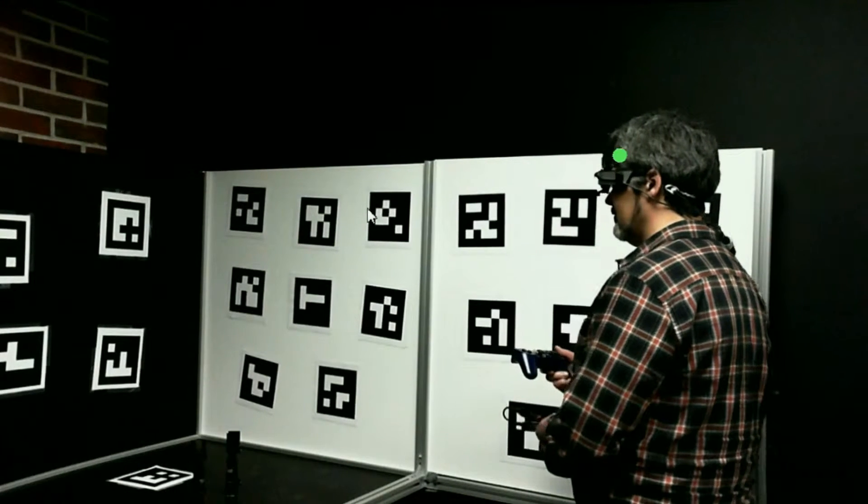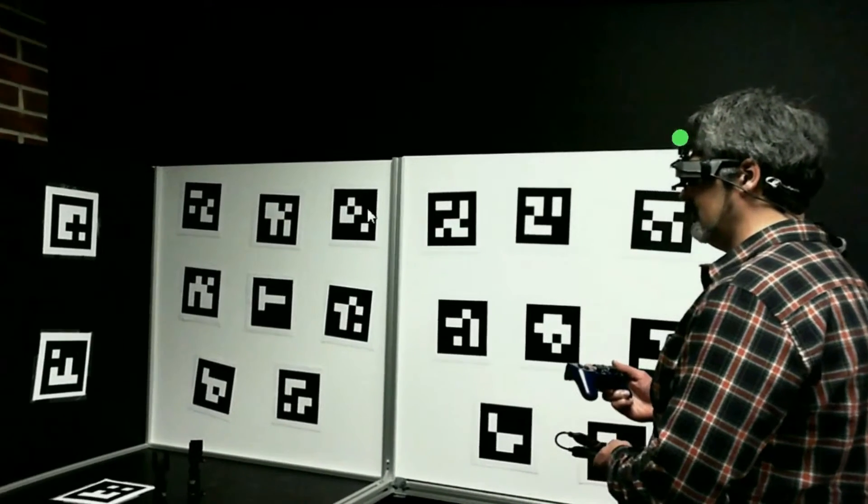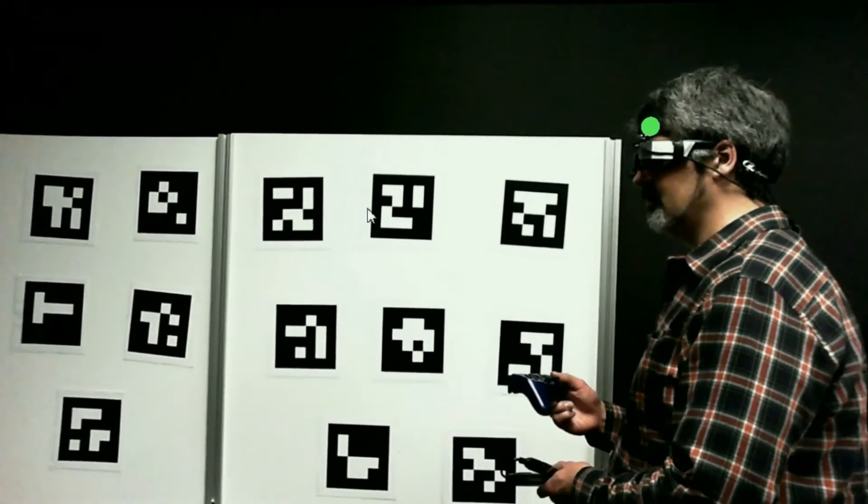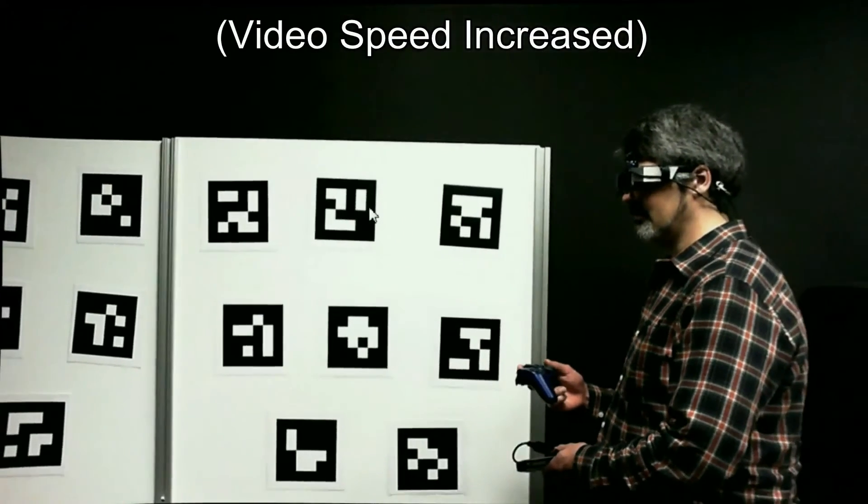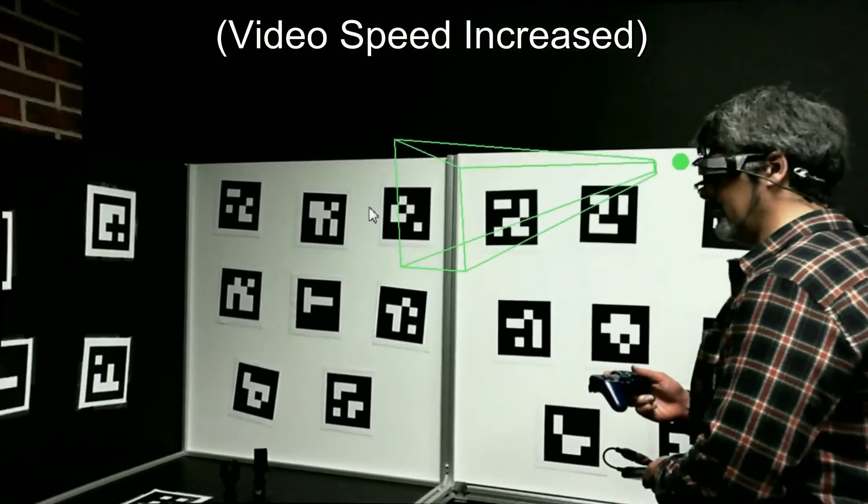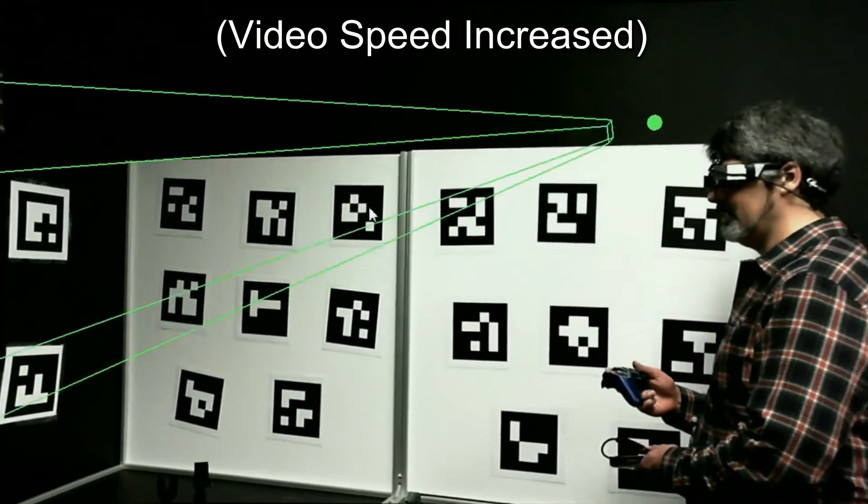The projection matrix produced by calibration consists of two sets of values. Extrinsic parameters correlate to the location of the eye relative to the display screen and are represented by a small virtual sphere in this visualization. Intrinsic parameters describe the viewing frustum used to render the images on the display. These intrinsic values are used to produce the visualization of the viewing frustum seen here.